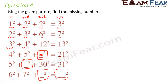Using our first observation — that the second term is one more than the first term — we can fill other gaps: if the first term is three, the second is four; if four, then five; if five, then six.